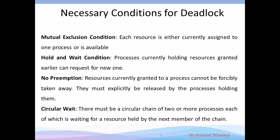For a deadlock to happen we need these four conditions. First, mutual exclusion: each resource is either currently assigned to one process or is available. A resource is exclusively held by one process — two processes cannot share a resource. If it is not held by one process, then it is available. Second, hold and wait: a process is holding a resource, stops executing, and waits for another resource.